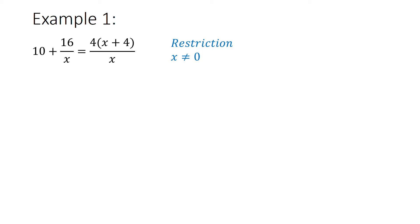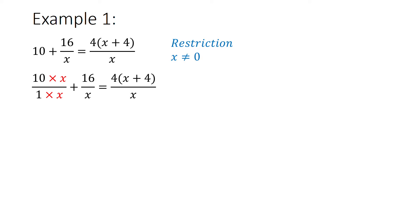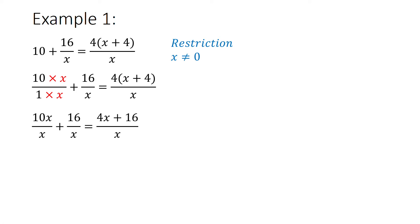Then I would solve the equation as normal. So I need to find an LCD, so I would multiply the 10 by x, and I'm going to distribute that 4 into the bracket. Once I've got my LCD, I drop my LCD and then I can solve. So I get my like terms, divide 3 by the 6 to get x alone, and I find that x is equal to 0.